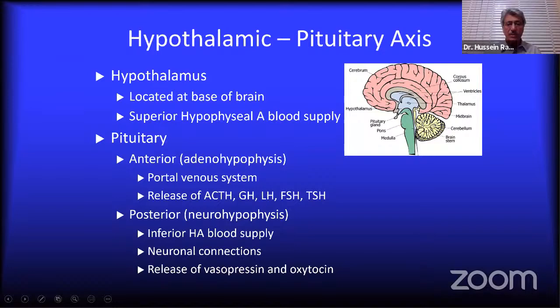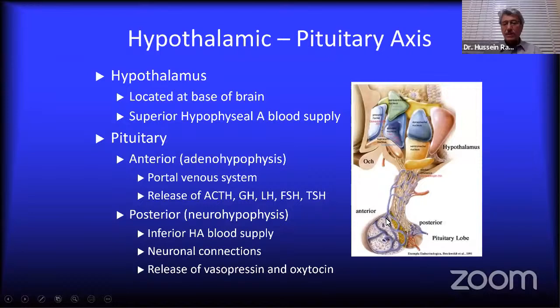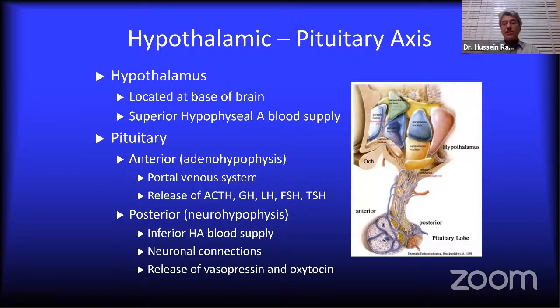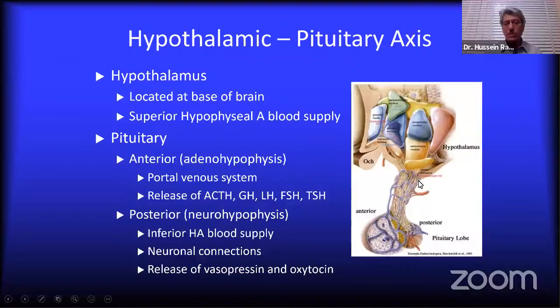The posterior pituitary preserves free water. The anterior pituitary connects to the hypothalamus via blood supply, whereas the posterior pituitary connects via nerve tissue. All these areas — hypothalamus and pituitary — will be affected with ischemic brain and brain death. Therefore, diabetes insipidus is one of the main features of injury or ischemia to the brain stem and hypothalamus, and is usually an ominous sign in ICU patients indicating brain death.